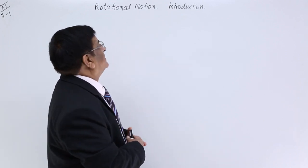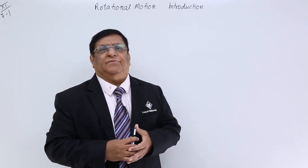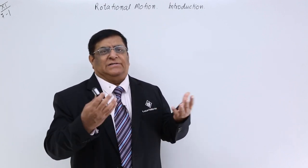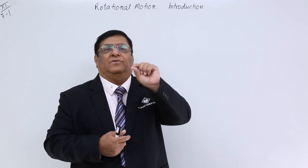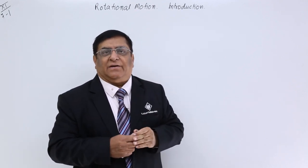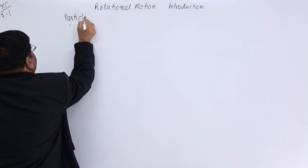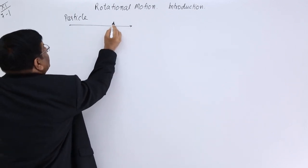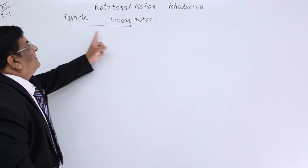We are starting a new chapter today on rotational motion or motion of a system of particles. First we will understand the terminology we are going to use. A particle, as it appears by the name, is a single particle. When we say particle, we assume there is no measurable length, width, and depth in that body. It is a point mass and we call it a particle. When it moves in a straight line, this motion is known as linear motion.